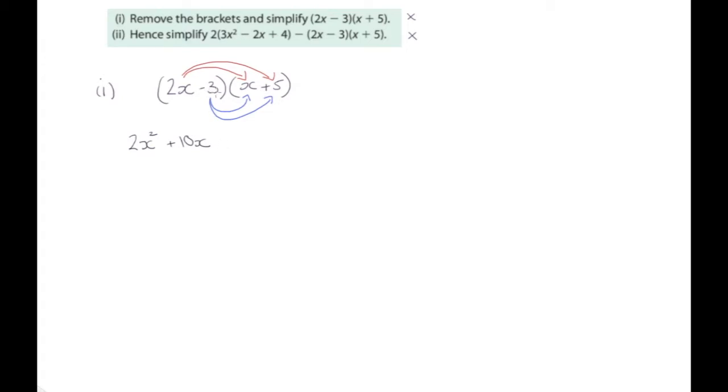Now we have minus 3. Be careful about minus. Minus 3 multiplied by x is minus 3x. And minus 3 multiplied by plus 5, 3 by 5 is 15. Now it's a minus by a plus so it's a minus, so that's minus 15.